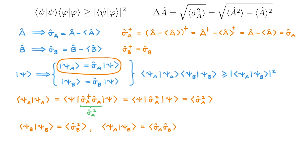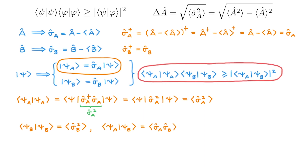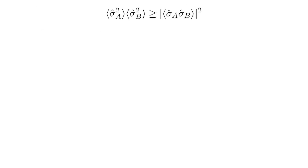We can now replace these expressions into the Schwarz inequality, and we get that the expectation value of sigma A squared times the expectation value of sigma B squared is larger than or equal to the absolute value squared of the expectation value of sigma A times sigma B. Since the Heisenberg uncertainty principle should eventually contain a commutator on the right-hand side, we will apply a useful operator identity to get closer to that result.